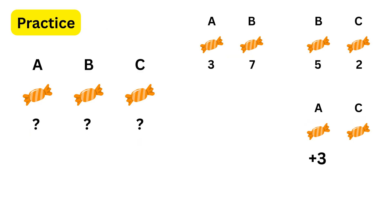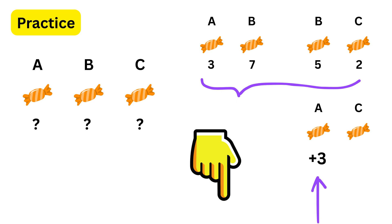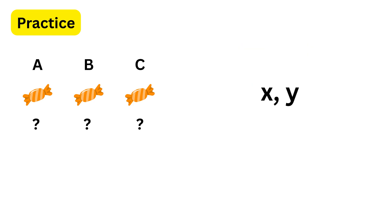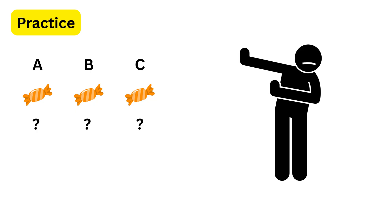Now try the same problem but with different ratios, and let me know your answer in the comments. Generally, people use variables like X or Y to solve such questions, but we should always think of ways to avoid them as much as possible by thinking logically first.